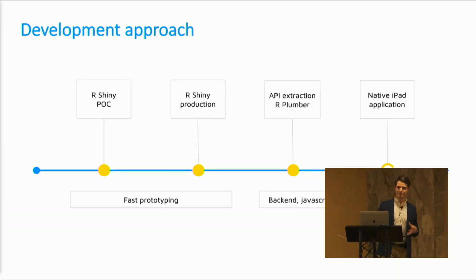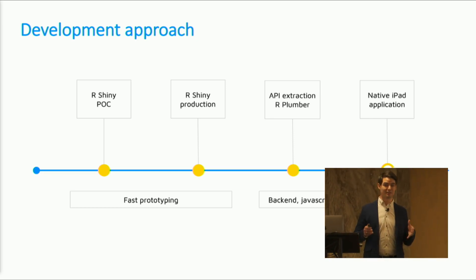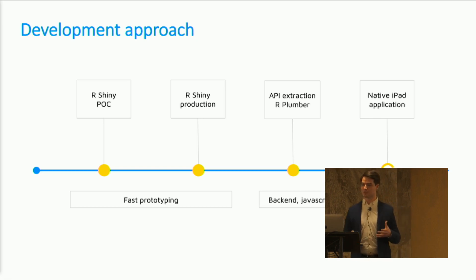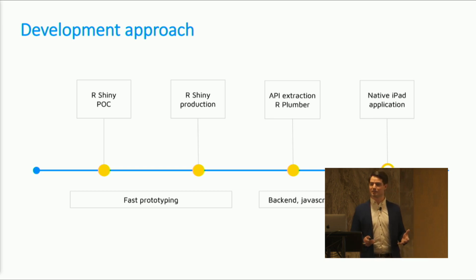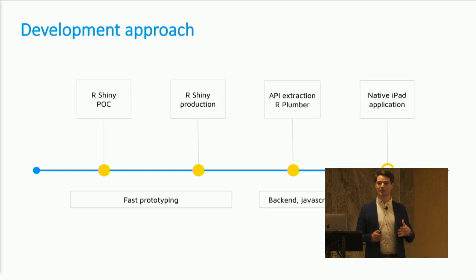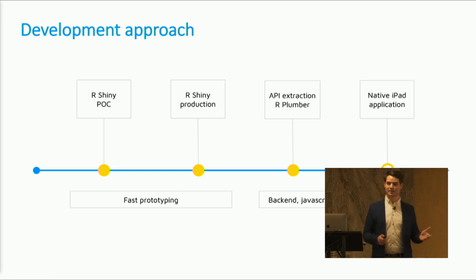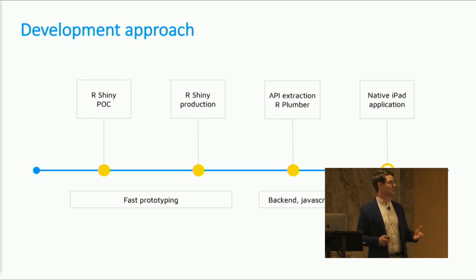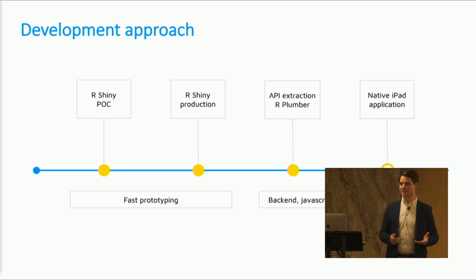Usually the best tools start with a very simple POC, and R and Shiny are just the best tools to start quickly, iterate fast, and get early feedback. I'd like to share the development approach that can lead you to a fully native offline application using the same R technology you use to build your models. You start with a simple R Shiny POC, iterate quickly, and with user feedback create a production-ready application. Once deployed and scaled, that's the right moment to extract an API — which can be used not only in the native app but anywhere you want.